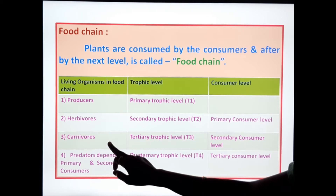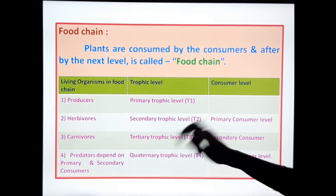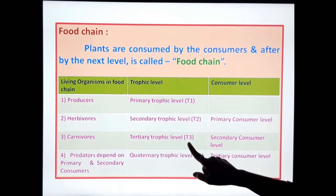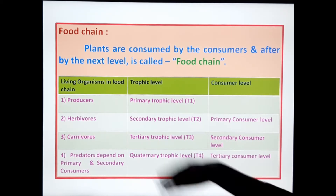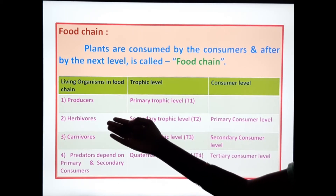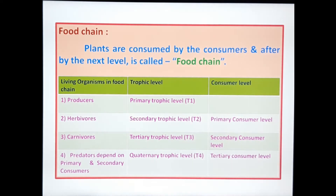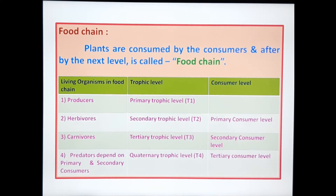Carnivores occupy the tertiary trophic level, T3, in the food chain. Carnivores depend upon herbivores directly or indirectly from producers, and are in the secondary consumer level. Predators occupy the quaternary trophic level and tertiary consumer level. This is the food chain with living organisms and trophic levels along with consumer levels.